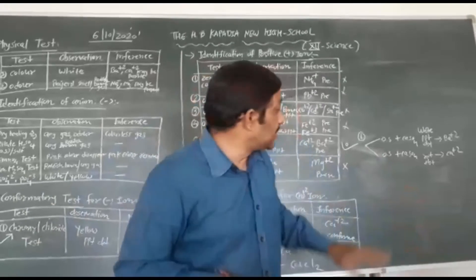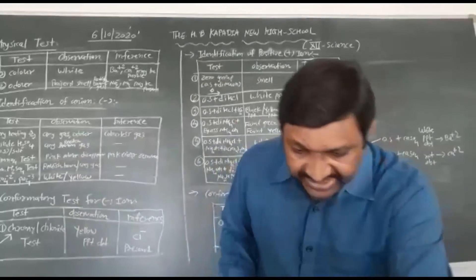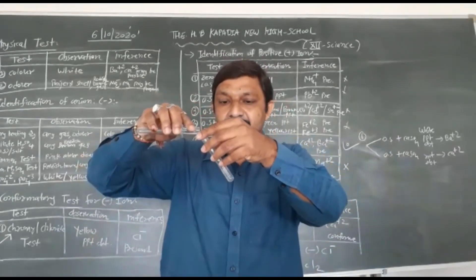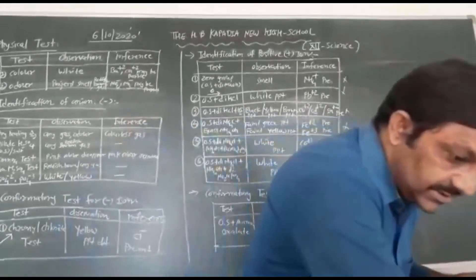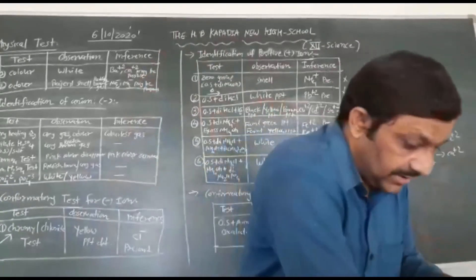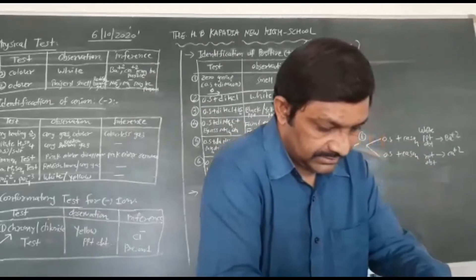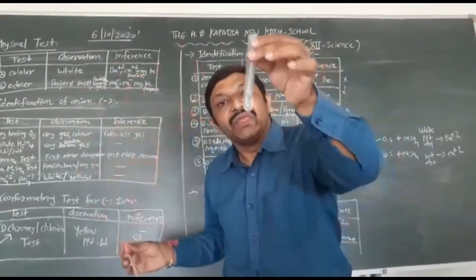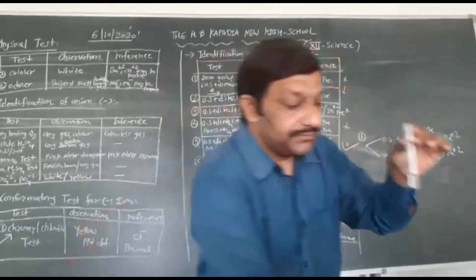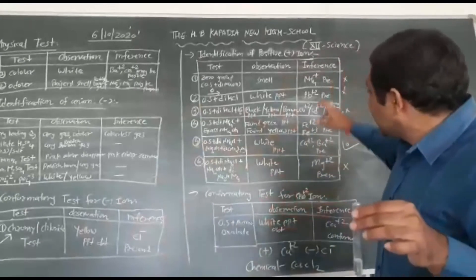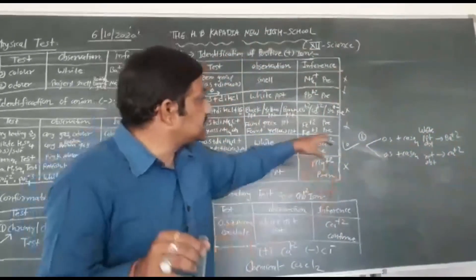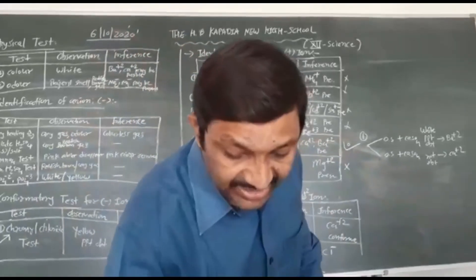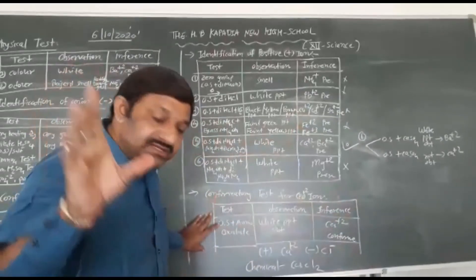When we add original solution plus CaSO₄, Ca²⁺ is present because no PPT is obtained. We will take the original solution in a new test tube, add CaSO₄ — no PPT is obtained. That's why Ca²⁺ is present in your practical as the positive ion. Original solution plus dilute CaSO₄ — no PPTs — therefore Ca²⁺ is present as the positive ion.